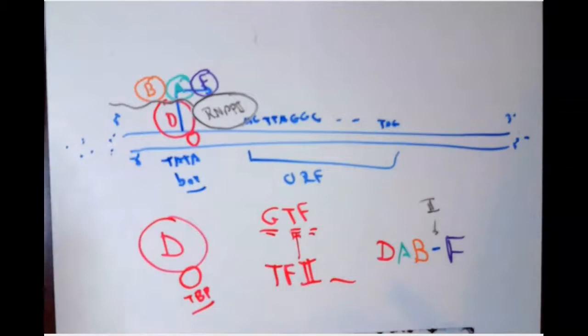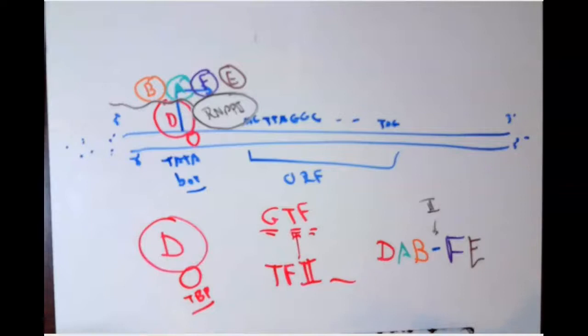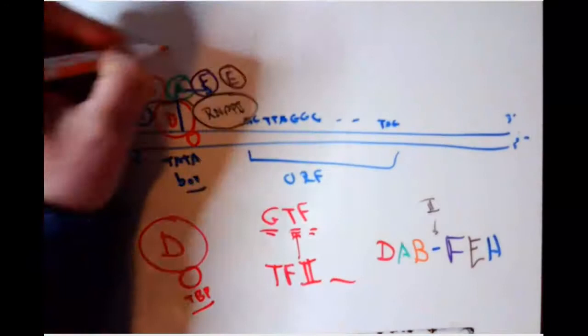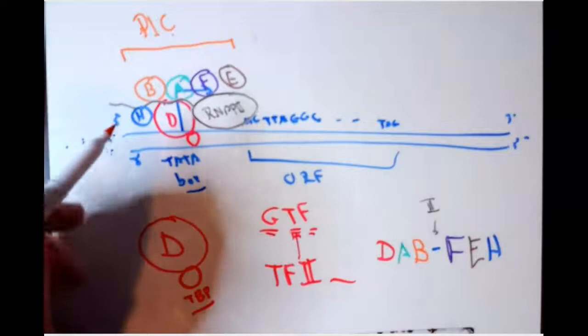So it's TF2D, TF2A, TF2B, then TF2F with RNA polymerase 2 — which has a long protein tail we'll discuss shortly — then TF2E and TF2H. TF2E stabilizes the recruitment of the polymerase with the rest of the complex. Finally TF2H completes the assembly. We have now assembled all of the general transcription factors, and this entire complex is referred to as the pre-initiation complex, or PIC — composed of all GTFs and RNA polymerase 2 stably recruited to the promoter, making us competent to initiate transcription.